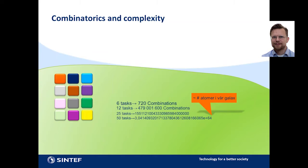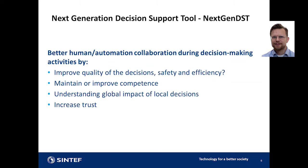What we want to do in this project is combine automation and human together. We want the optimization part to improve the quality of decisions in terms of safety and efficiency, but at the same time give the rationale behind the solution and involve the planner in the loop — to maintain the knowledge they have, and maybe even improve it. For example, by showing how a local decision can make a global impact. We hope this increases trust in optimization, so that if the system goes down, the operator still has enough competence to solve problems efficiently until it comes back up.